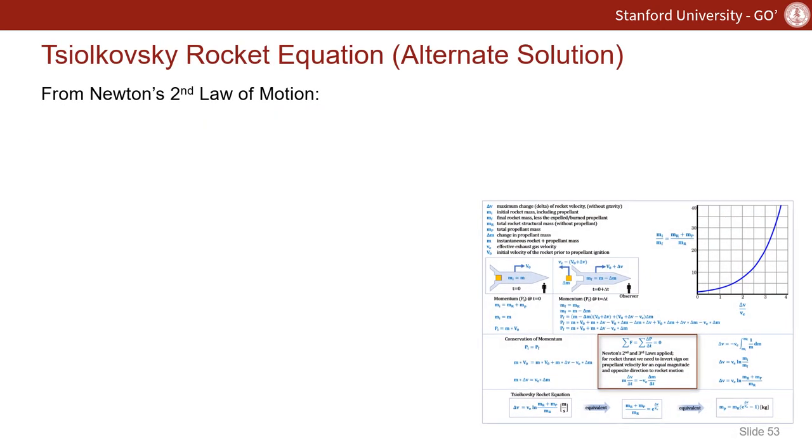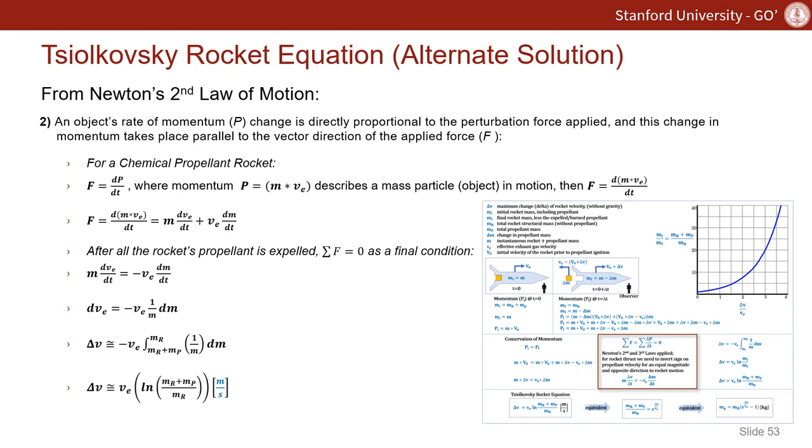For the sake of completeness, I've included a third way to solve Tsiolkovsky's rocket equation. There are many, but this is actually my favorite because it's very compact. We start with Newton's second law of motion, which is written in this format. We note that in the future, the sum of forces will equal zero.